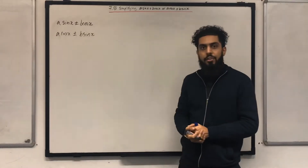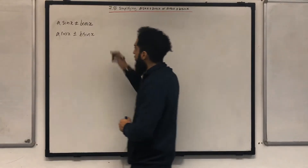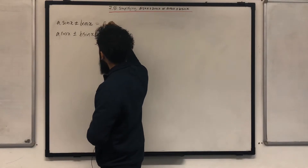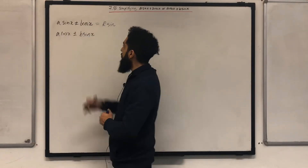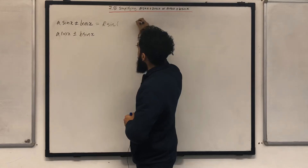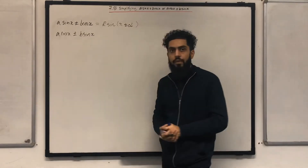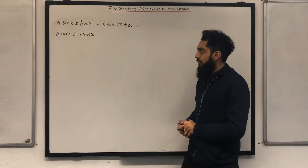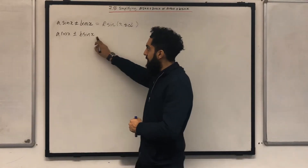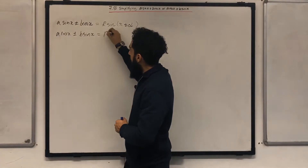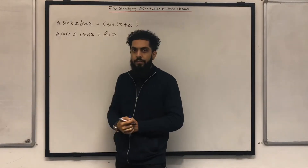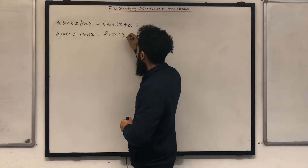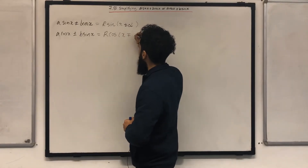The first trigonometric expression can be expressed in the form R sin(X ± α) — the reason it's R sine is because the first term is sine. The second trigonometric expression can be expressed in the form R cos(X ∓ α) — the reason it's cosine is because the first term is cosine.